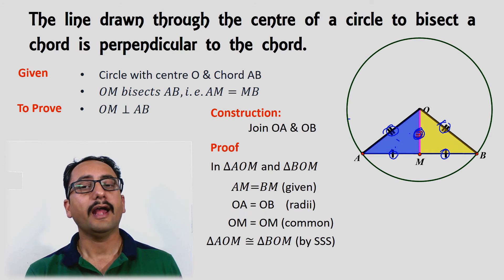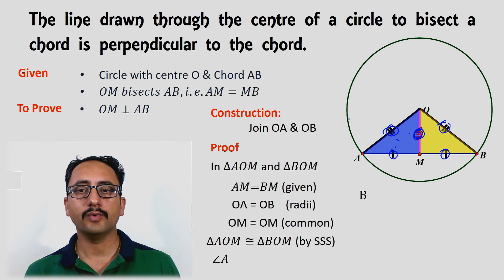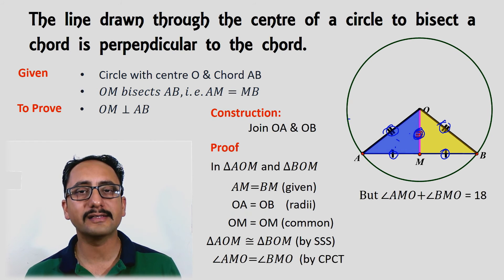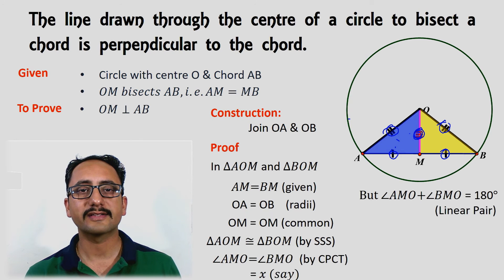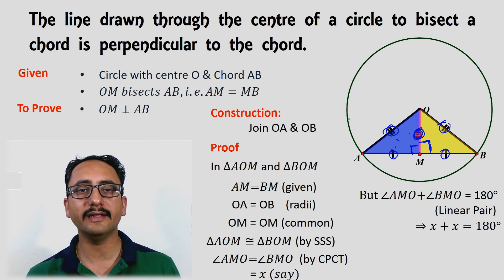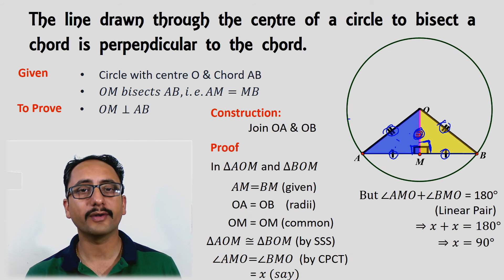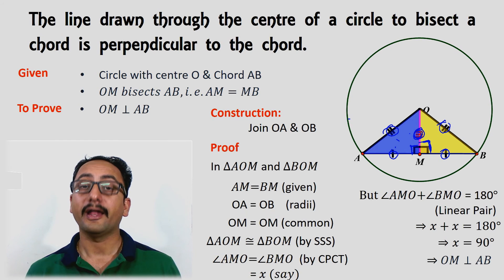Since the triangles are congruent, the corresponding parts are equal, so the two angles at M are equal. Let each angle equal x. They also form a linear pair, so x plus x equals 180 degrees, giving 2x equals 180, which means x equals 90 degrees. Therefore, OM is perpendicular to AB.